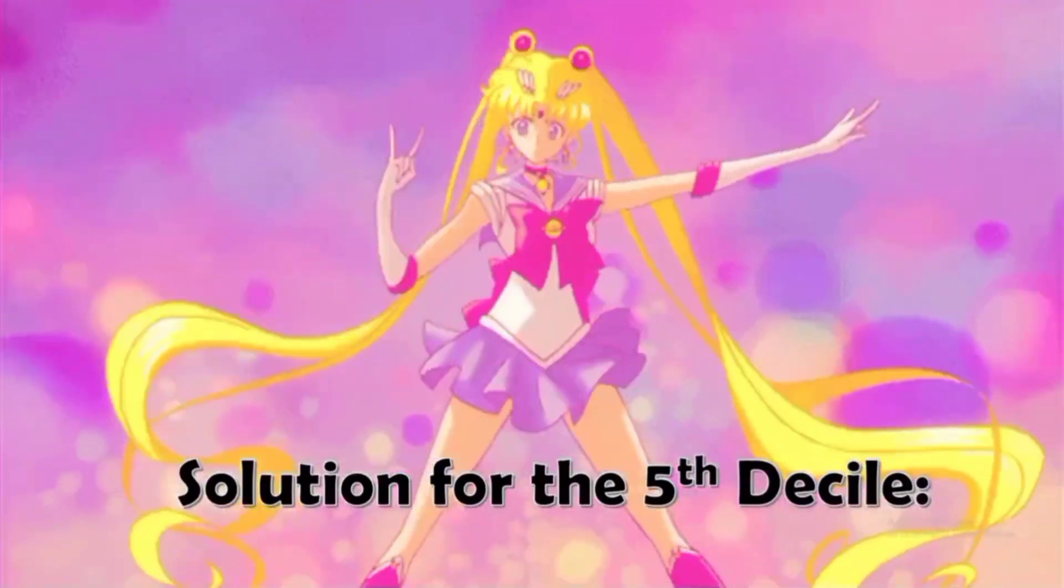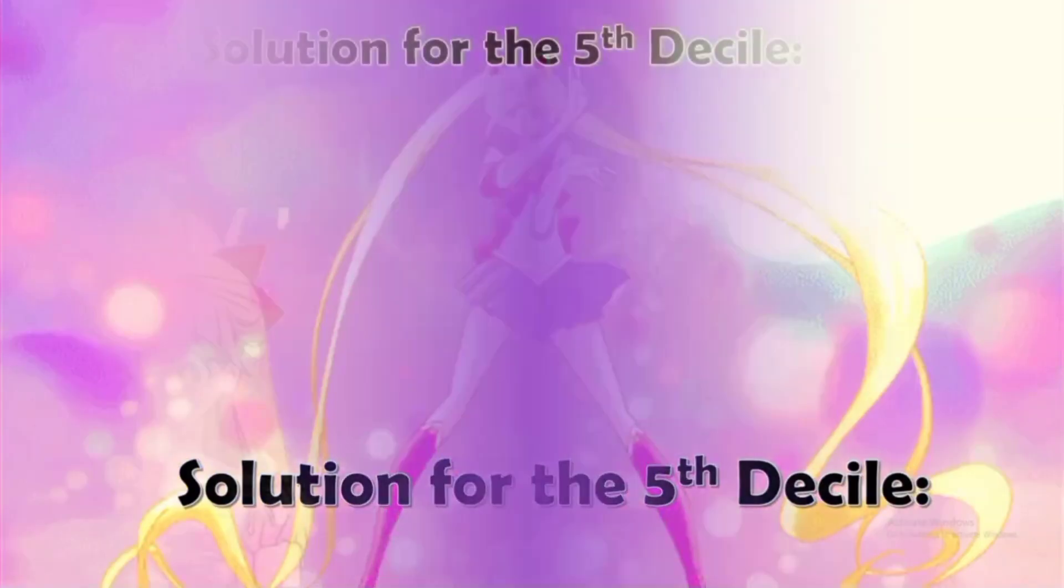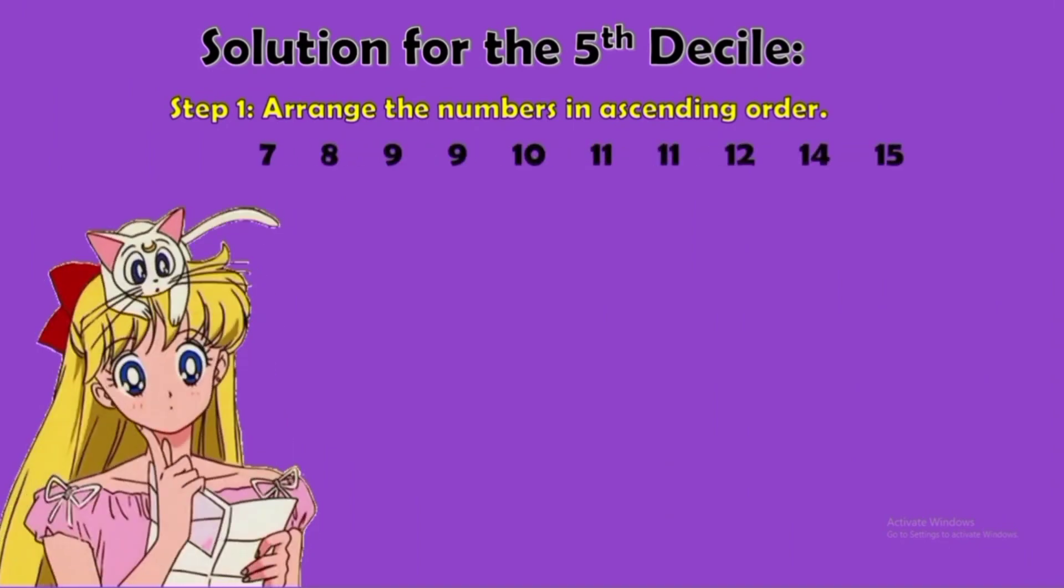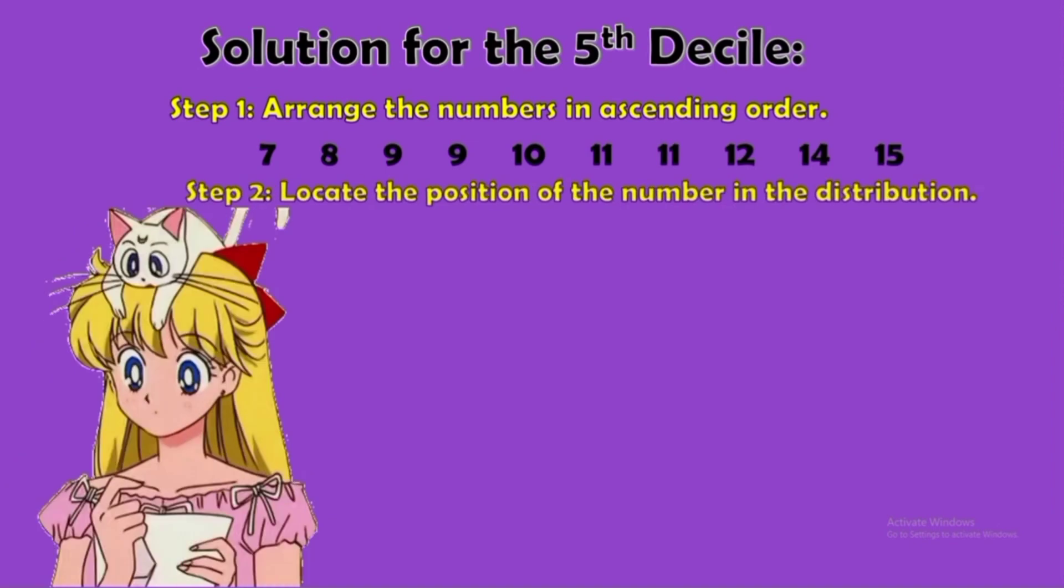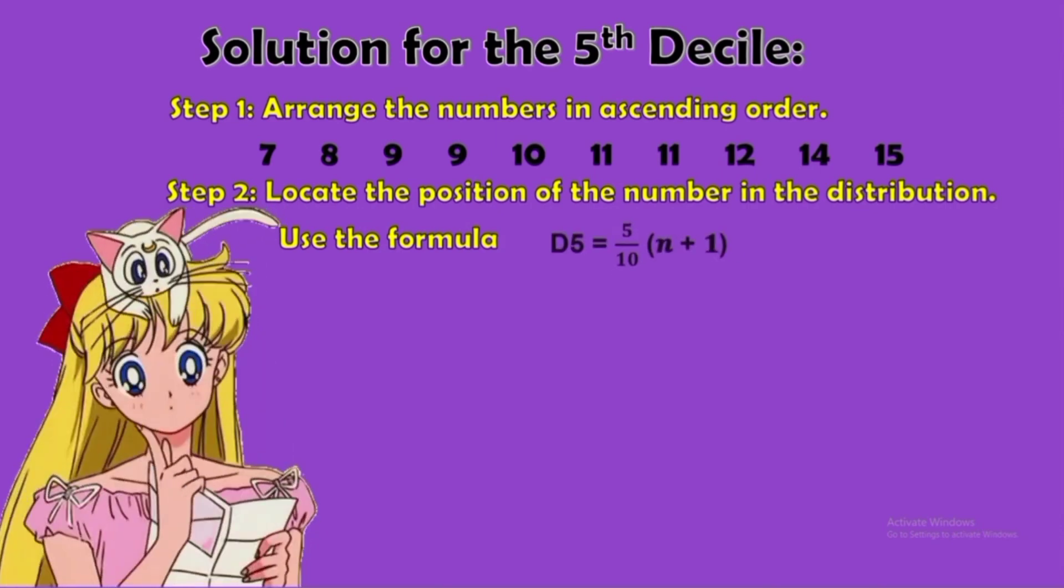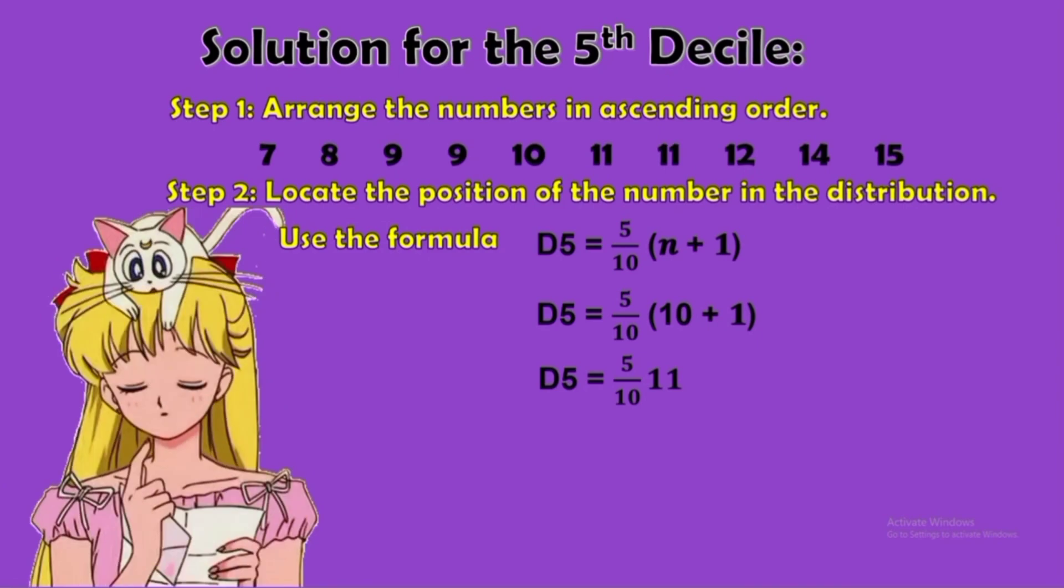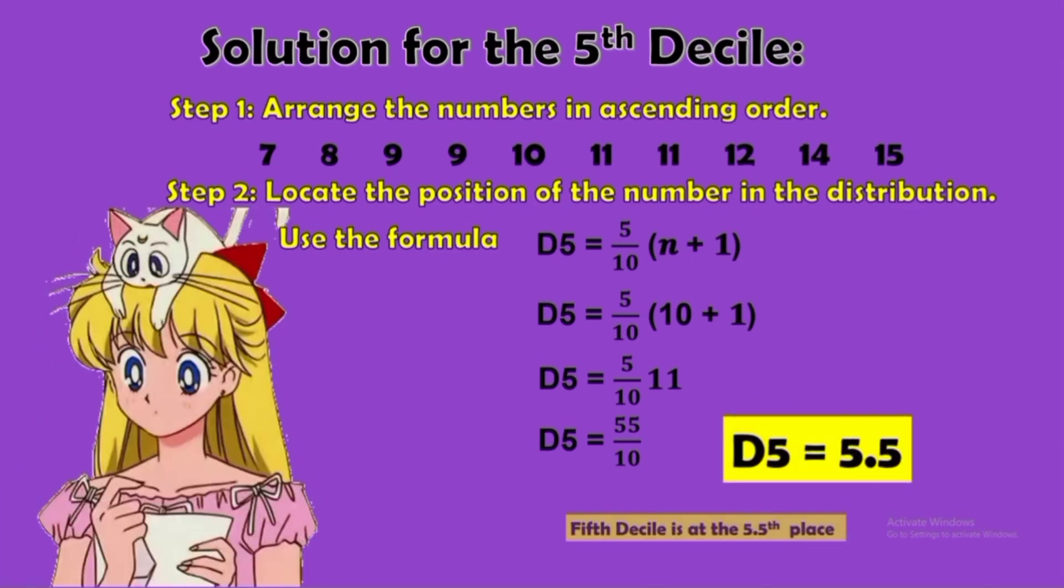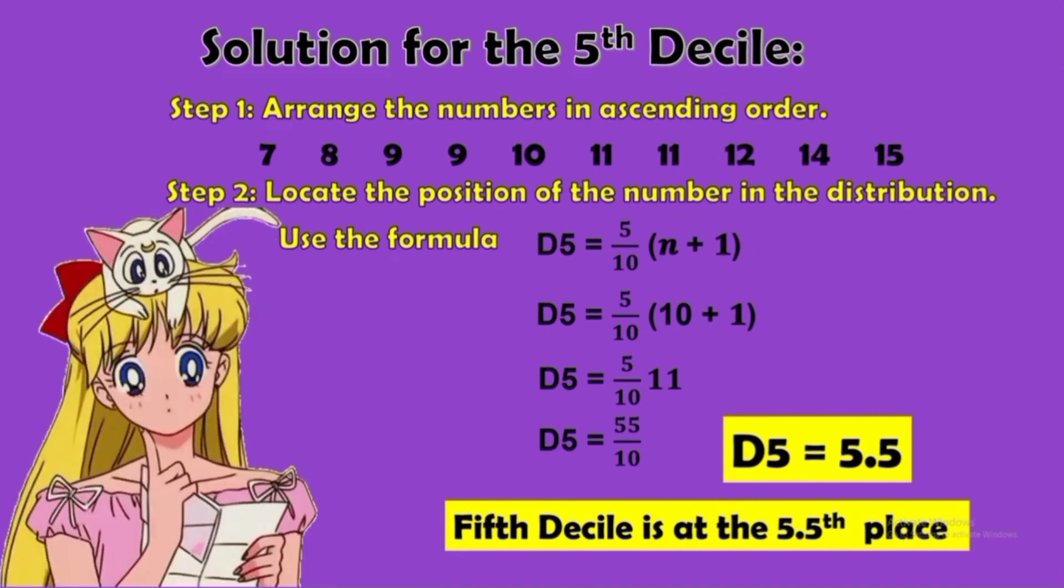Solution for the fifth decile. Arrange the numbers in ascending order. We will use the same order in quartile. Number 2: Locate the position of the number in the distribution. We will use this formula. First, substitute the value of n. That is 10. 10 plus 1 is 11. 11 times 5 over 10 is 55 over 10. 55 divided by 10 is 5.5. Therefore, our fifth decile is at the 5.5th place.